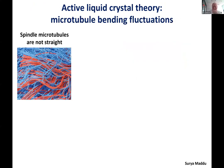Another thing Surya looked at: microtubules in the spindle aren't straight — they're bent. This is a different issue from collective director fluctuations. From the active liquid crystal theory perspective, any given microtubule can be thought of as a semi-flexible filament in a background of other microtubules, which form an active nematic.